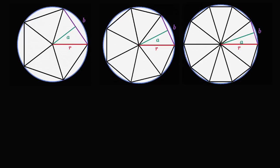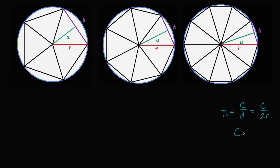What I'd like to do in this video is make an informal argument for why the formula for the area of a circle is π r squared. We're going to start with the most traditional definition of the number pi — that pi is equal to the ratio of the circumference to the diameter of a circle. This literally just comes straight out of the definition for the number pi.